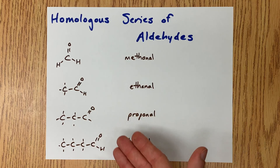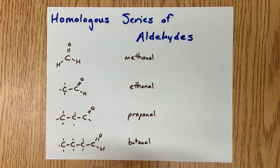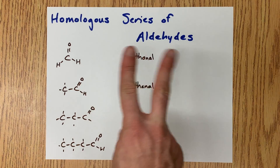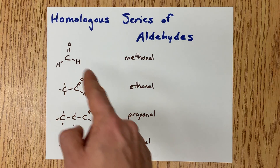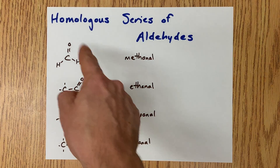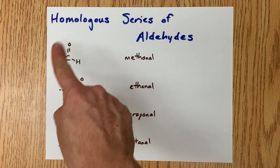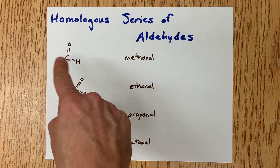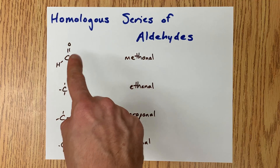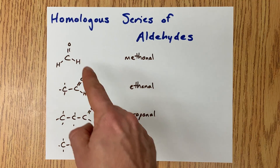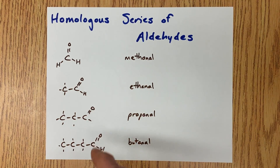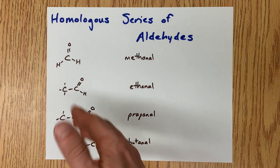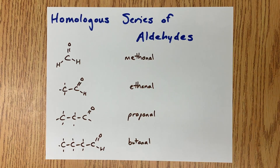The only thing that really differs from one member to the next is that the molecules are getting larger. That means stronger van der Waals forces between the molecules. So a small aldehyde may be a gas or liquid at room temperature, and the larger you get, the more likely you are to be solid or have a high melting and boiling point.